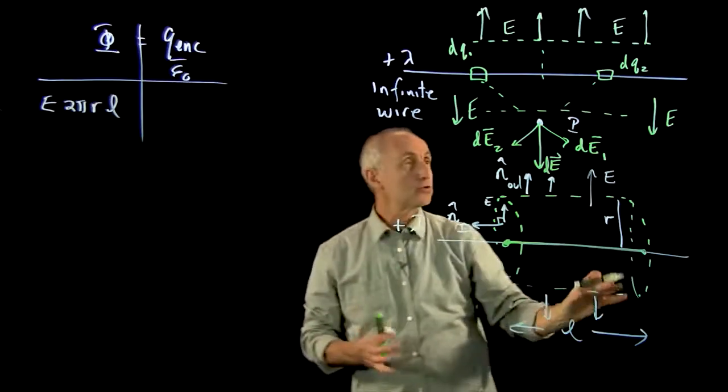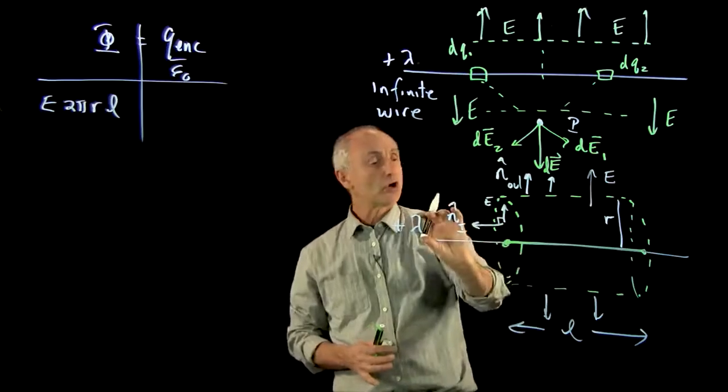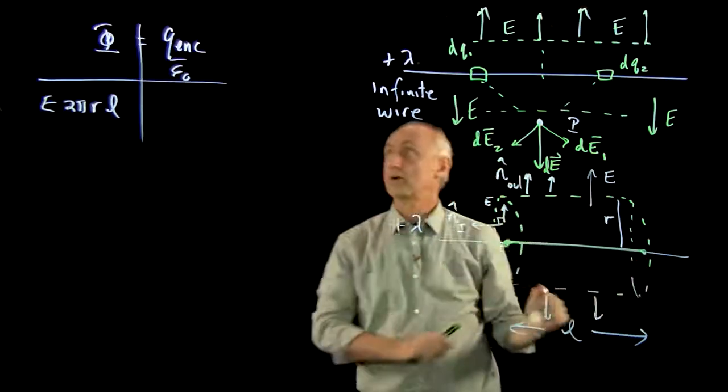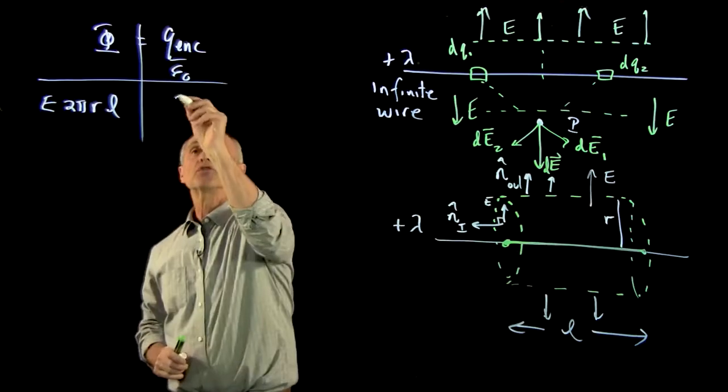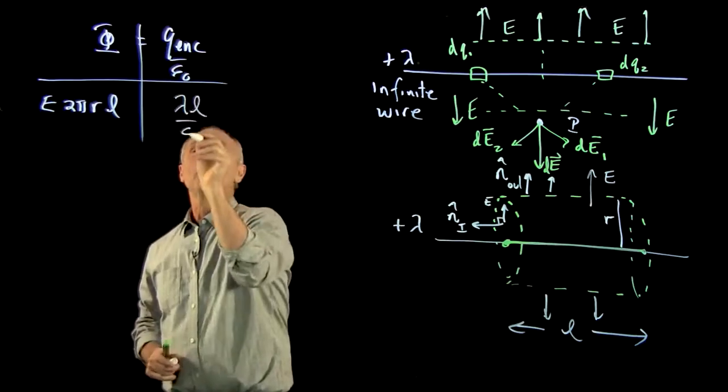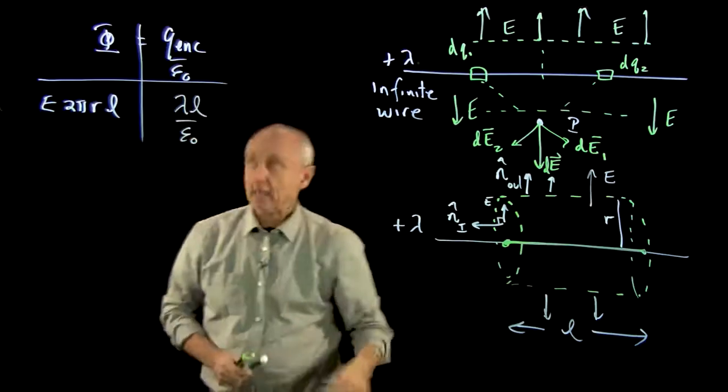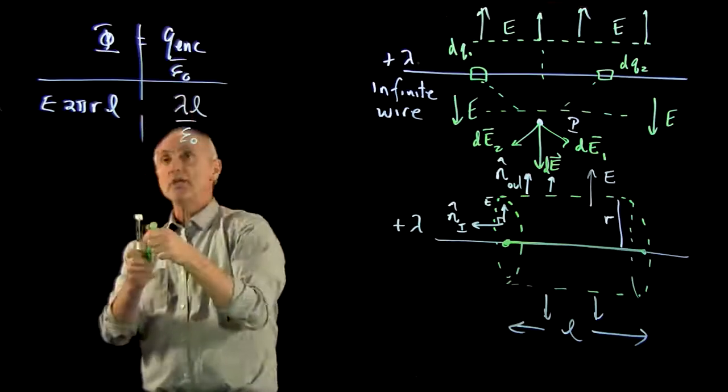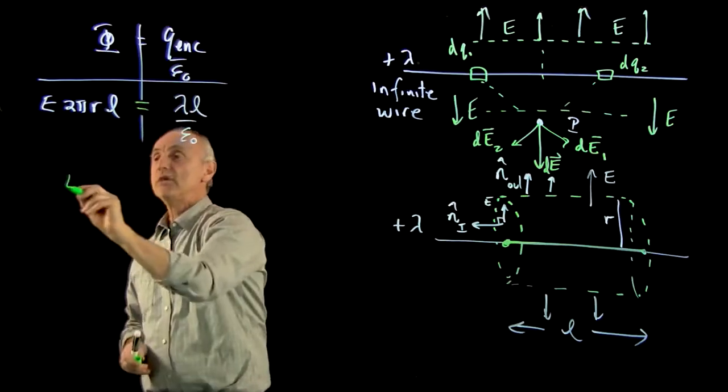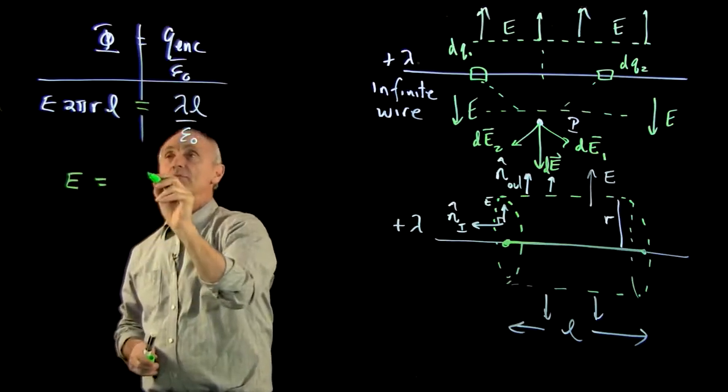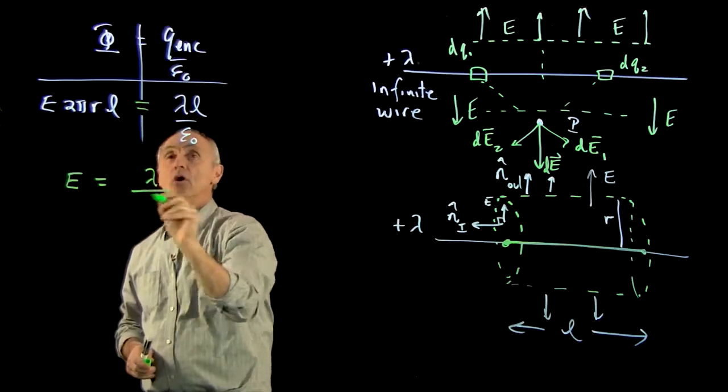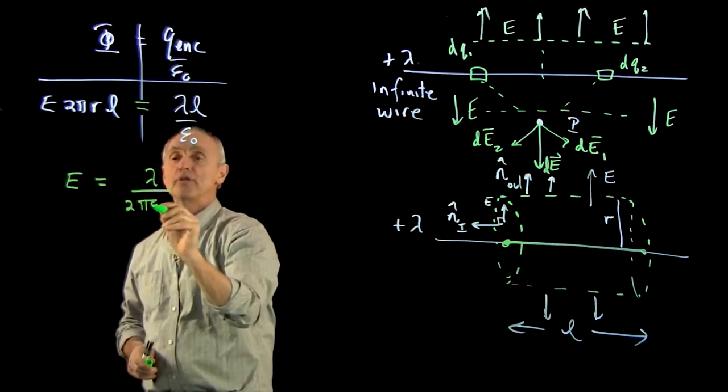And the charge enclosed, well, lambda is the charge per unit length. We have a length L of our Gaussian surface. So this is just lambda times L over epsilon 0. And when we set these two quantities equal, we see that the electric field is given by lambda over 2 pi epsilon 0.